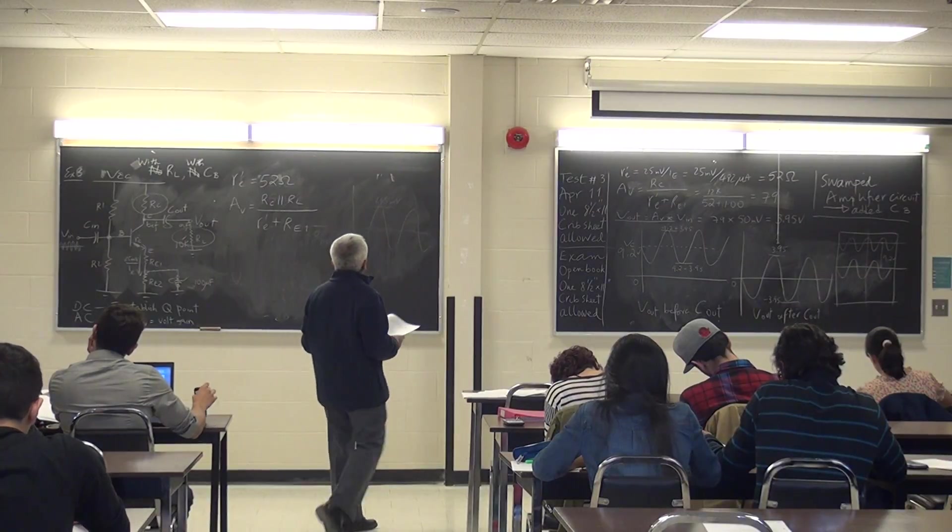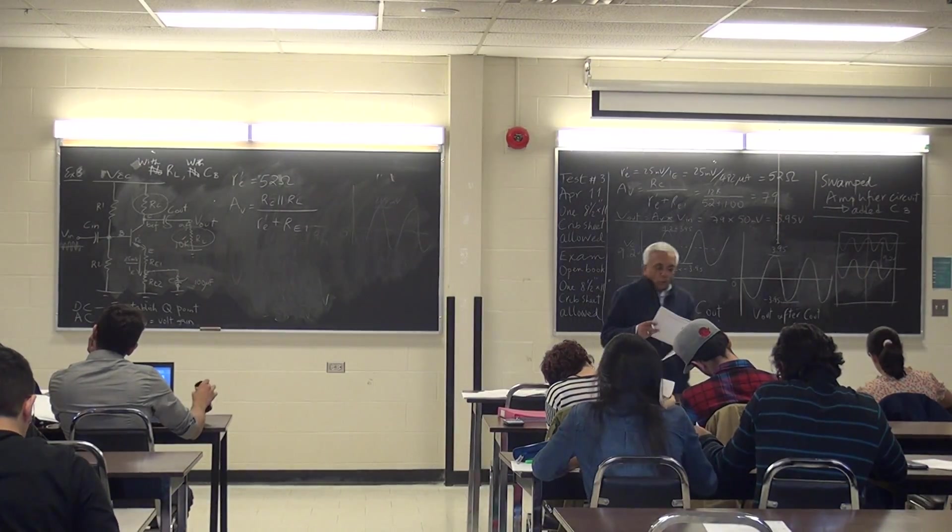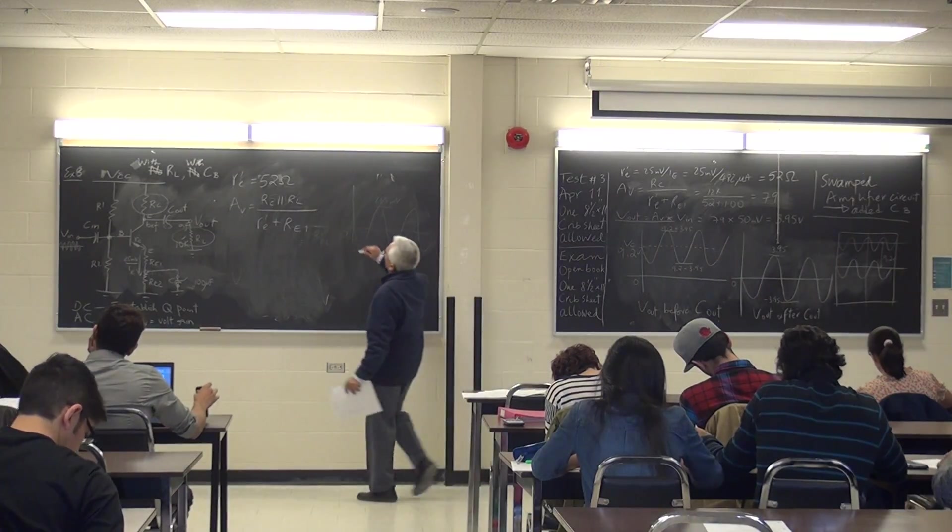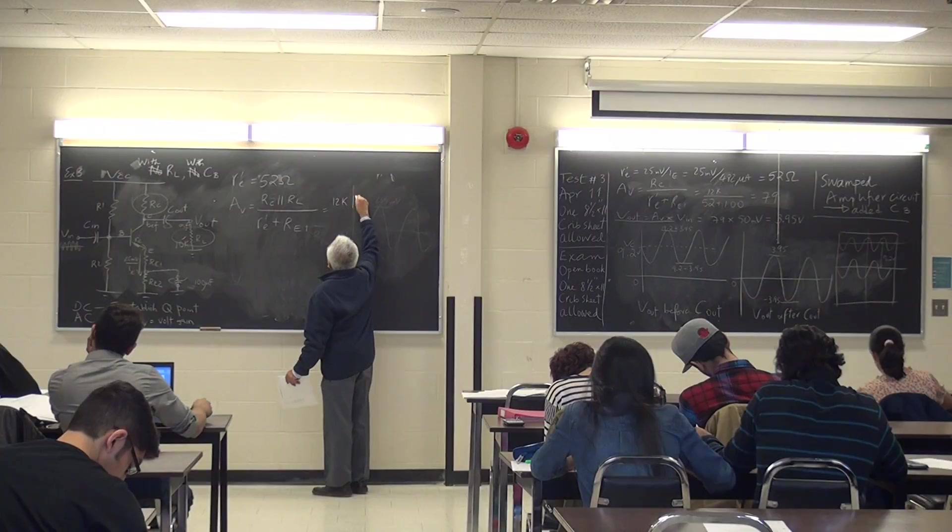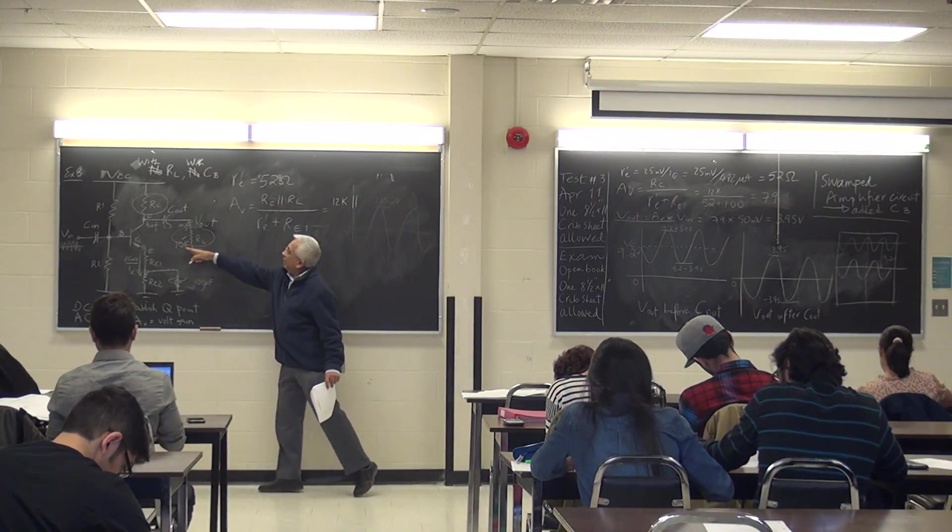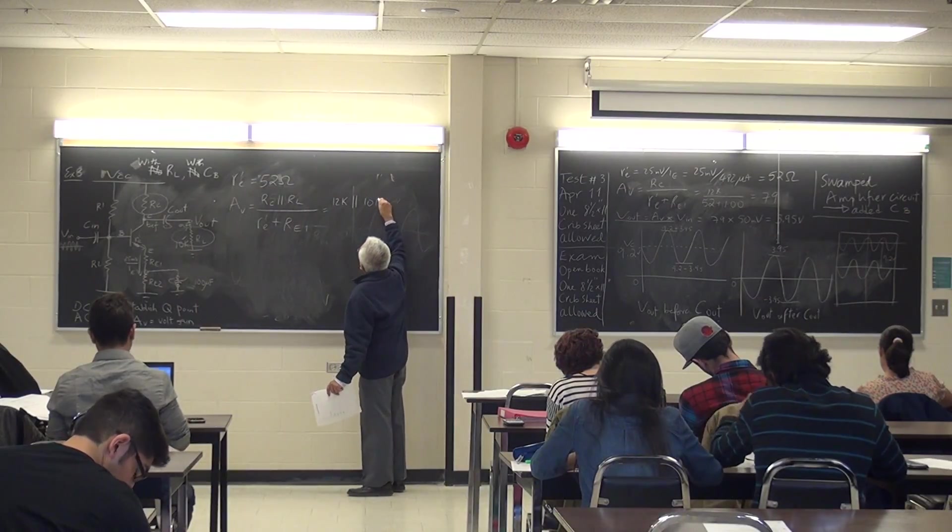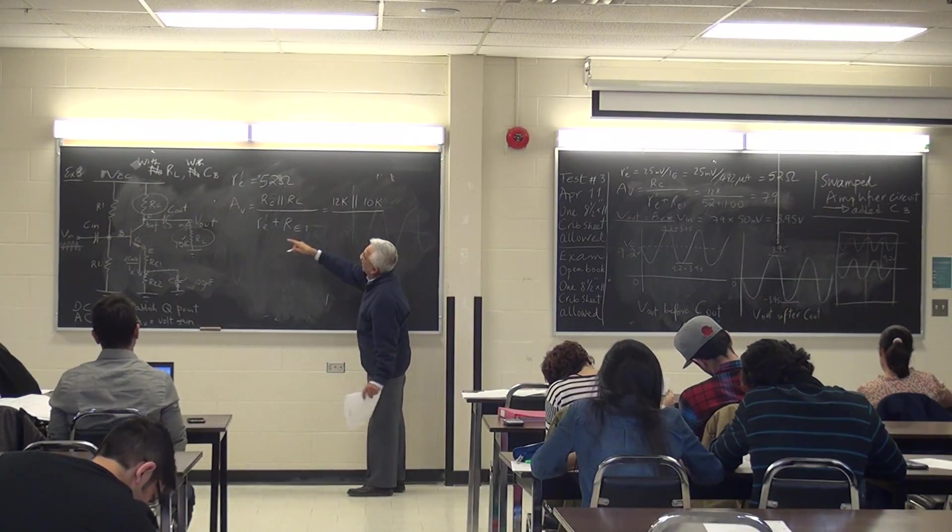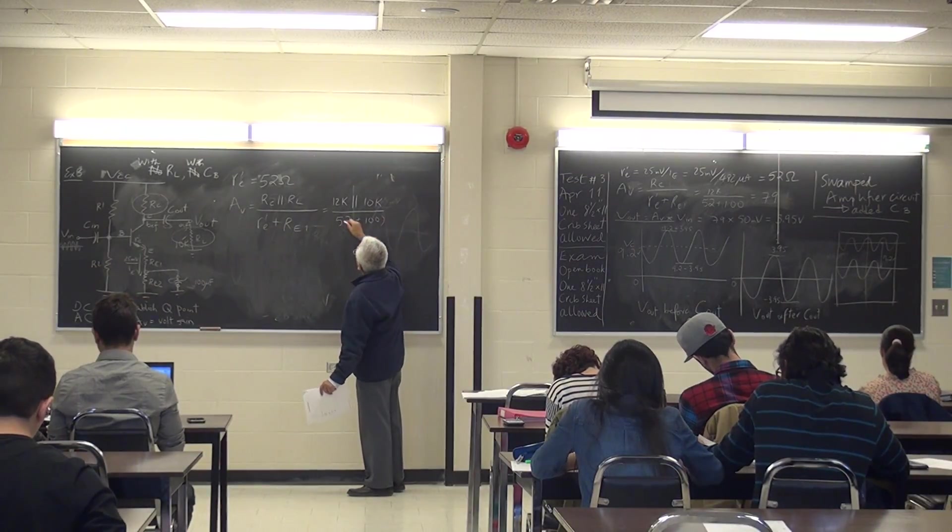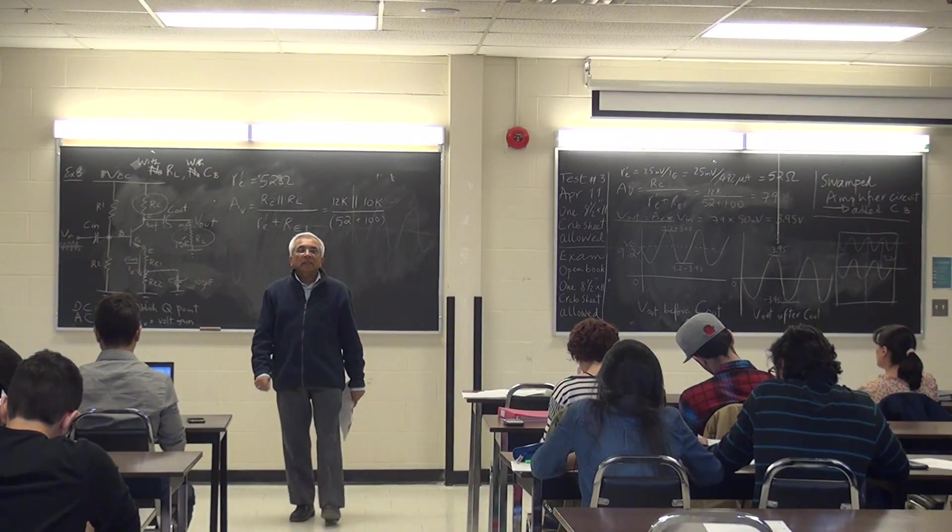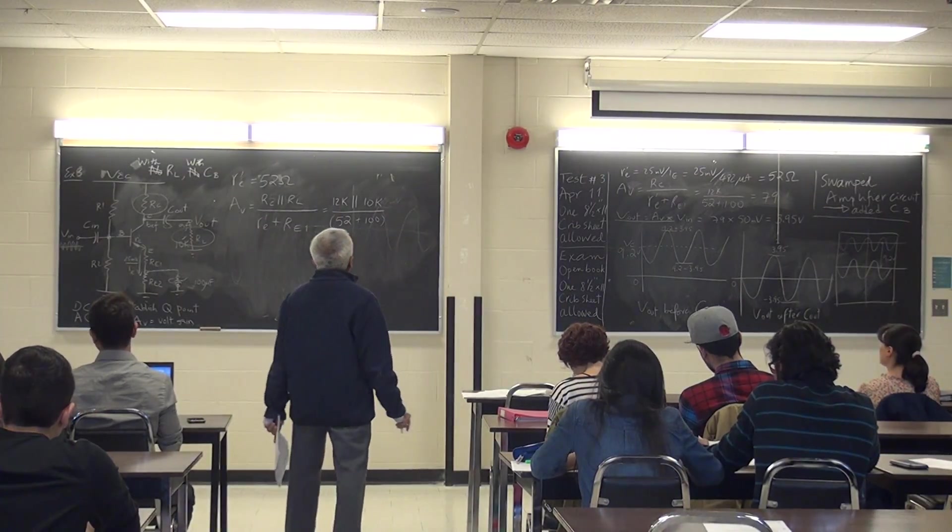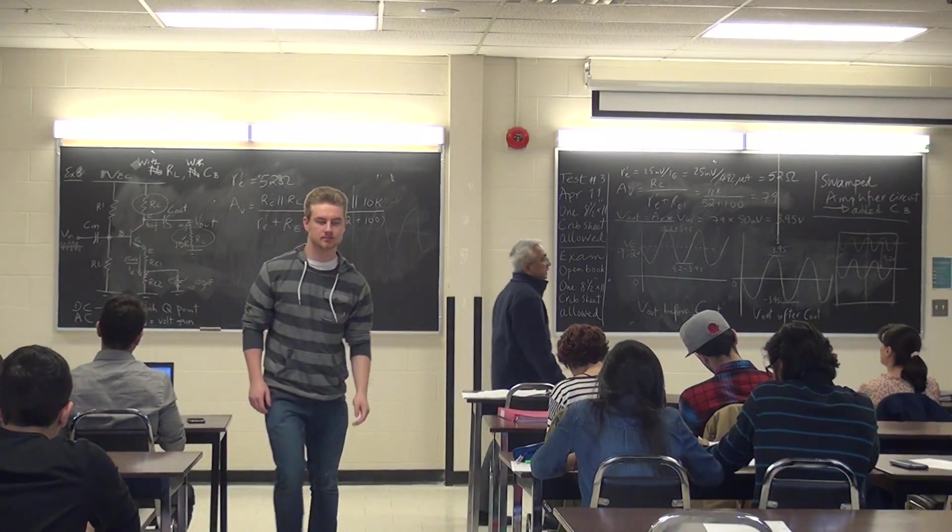So let's calculate AV this time with a load. RC was 12K in parallel with 10K, and RL we said is 10K, divided by 52 plus 100. So parallel, 12K in parallel with 10K is product over sum.